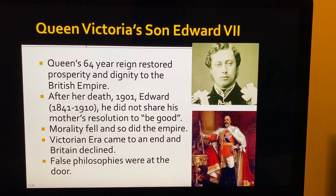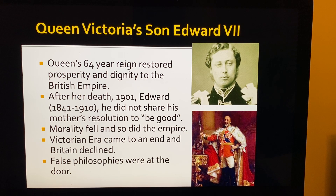Queen Victoria said, 'I want to do good.' She reigned for 64 years, and her heart was, 'I want to be good for the empire, for England and the British Empire.' The Queen's 64-year reign restored prosperity and dignity to the British Empire. But after the Queen's death in 1901, Edward, her son, who lived 1841 to 1910, did not share his mother's resolution to be good. So morality fell, and so did the empire.